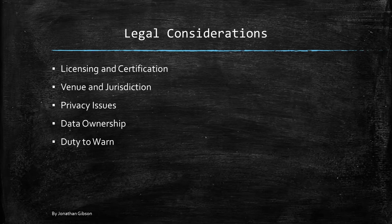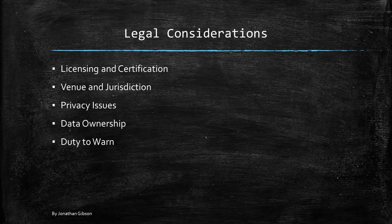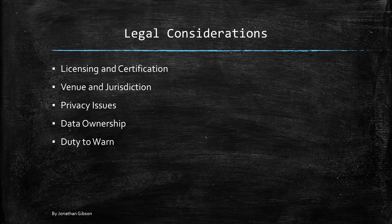Other legal considerations include licensing and certification. Outside of the CEH and other certificates that prove your proficiency to conduct a penetration test, some states require pen testers to also be licensed private investigators. Make sure to check your state laws before conducting any penetration tests on clients. Regarding jurisdiction, another key issue is where the test is being conducted — you need to research and ensure your contract and possibly your licensing and certifications are up to par for that state's laws. On a contract, you can assign jurisdiction to an agreed-upon state if your client is in a different state than your business.